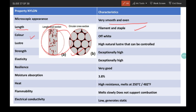It is off-white color. It has higher luster than rayon, and the luster can be controlled. It has exceptionally high strength, exceptionally high elasticity. It has very good resilience. Moisture absorption is quite low, that is 3.8 percent.